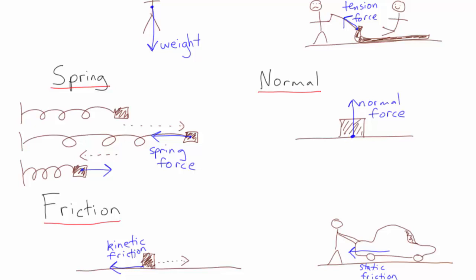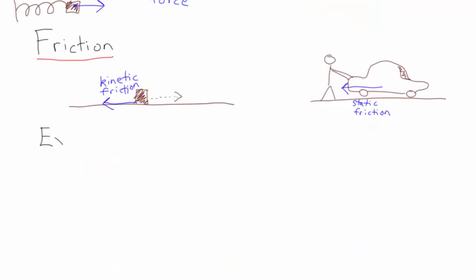In these free body diagrams, we've just drawn one type of force on each diagram. However, in many cases, there will be more than one type of force acting on an object. Let's consider an example where we have a stationary book sitting on an angled desk, and we'll draw a free body diagram showing all of the forces.